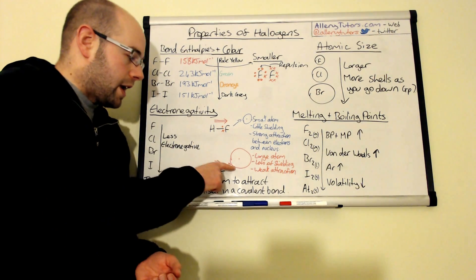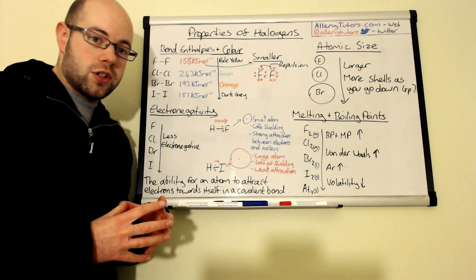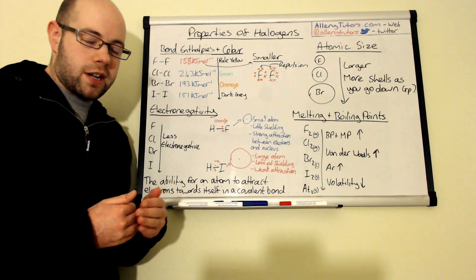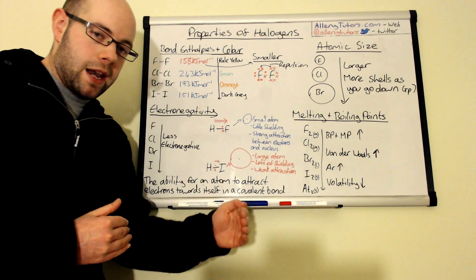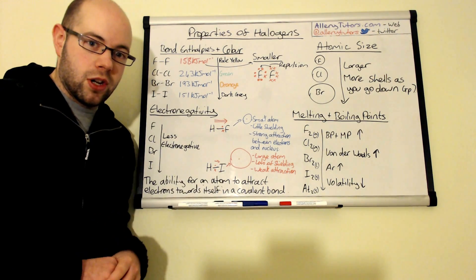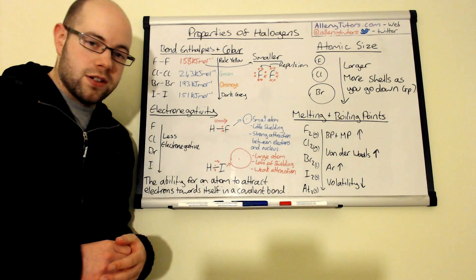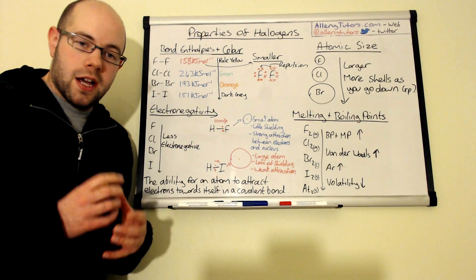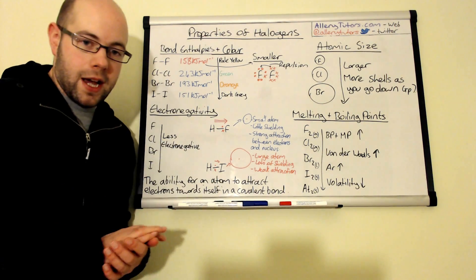If you compare that to something like iodine which is a very large atomic radius and it has lots of shielding and the attractive forces between the electrons that have been shared in the bond and the nucleus is obviously a lot weaker so therefore iodine is not as electronegative as fluorine and so therefore the polarity in something like HI is a lot weaker compared to something like HF.